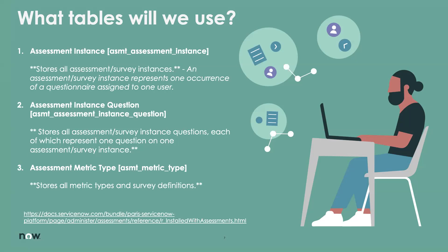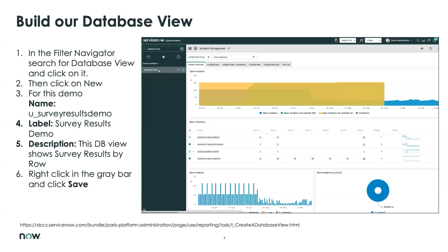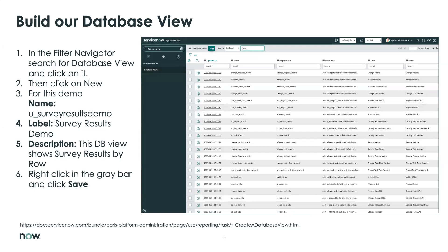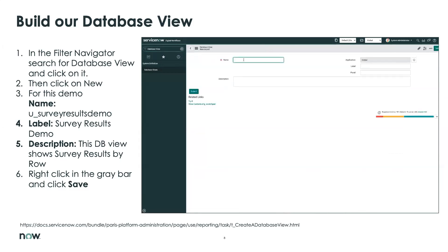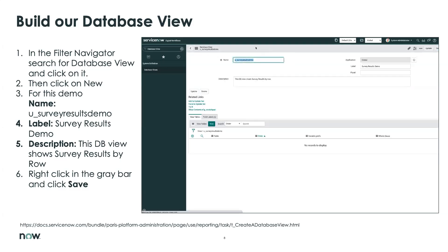We'll connect to the Metric Type table — that's the particular survey itself — and it connects to the questions and the responses. Those are the tables we'll actually work with today inside our database view. If you're not familiar with building a database view, you go to the filter navigator, type in 'database views,' and it comes up with all the ones that are there. If you're not an admin, you won't see that. Here we create our database view — named 'survey results demo' — give it a label and a description.